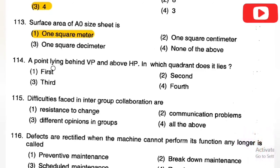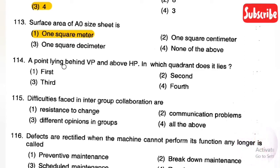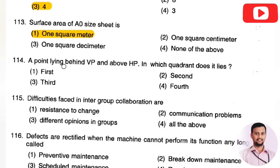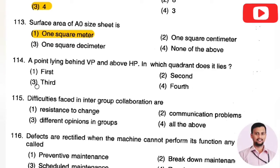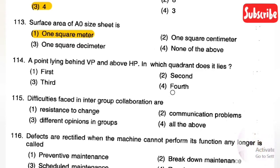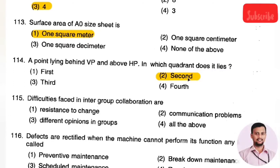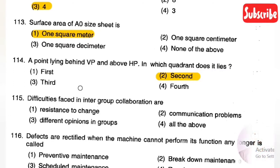The next question: a point lying behind VP and above HP — in which quadrant does it lie? Options are first, second, third, or fourth quadrant. The right answer is Option 2, the second quadrant. This point lies in the second quadrant.